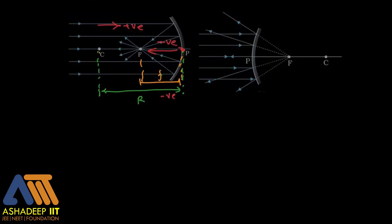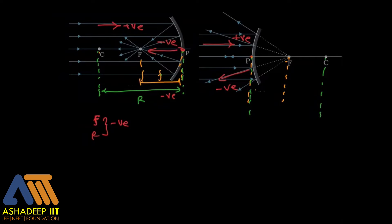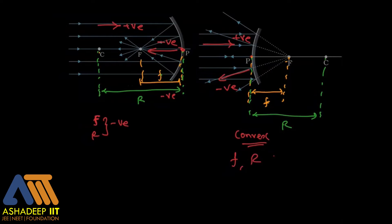For the concave mirror, focal length and radius of curvature are both negative. Whereas for the convex mirror, the incident ray goes in this direction making this the positive direction, so focal length and radius of curvature for the convex mirror are both positive — greater than zero.